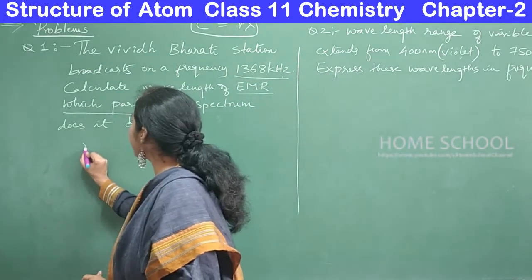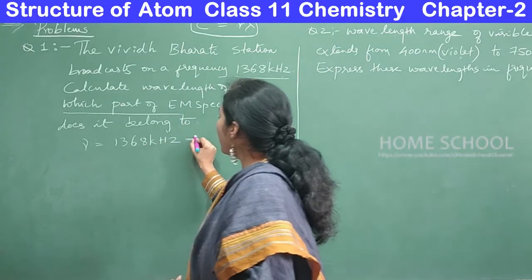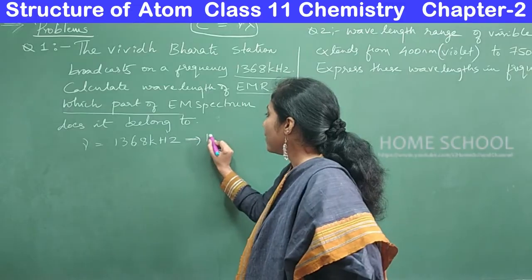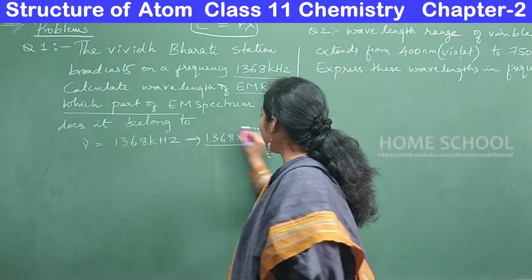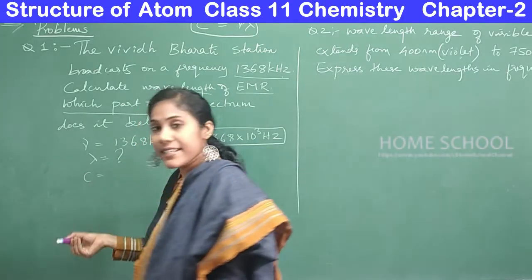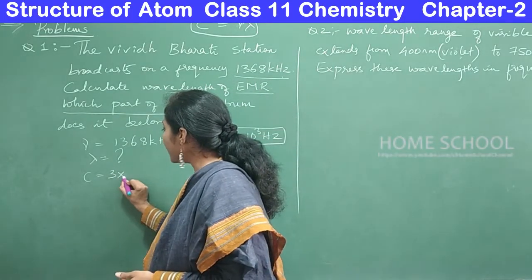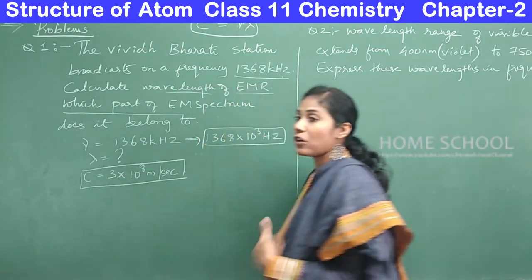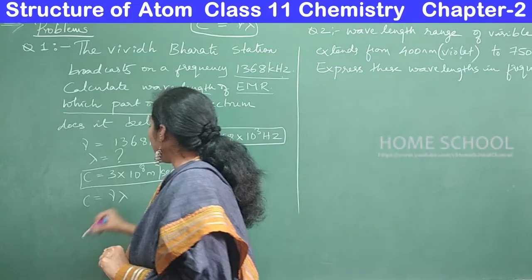The given frequency is ν = 1368 kHz. Convert this to hertz: 1 kilo = 10³, so 1368 kHz = 1368×10³ Hz. We need to find λ. The speed of light c = 3×10⁸ m/s — always remember this constant, it won't be given in the question. Our relation is c = νλ.